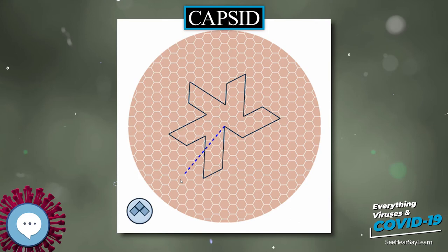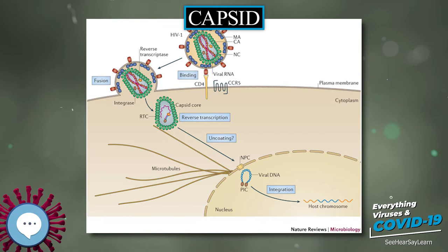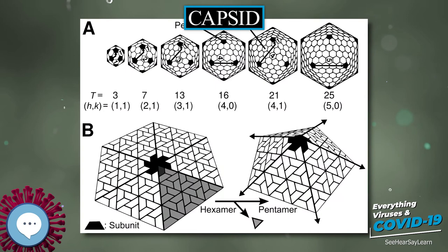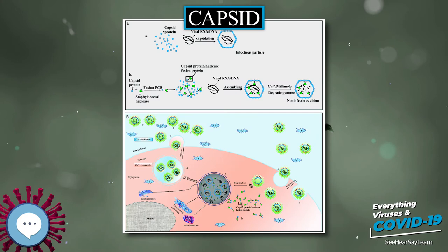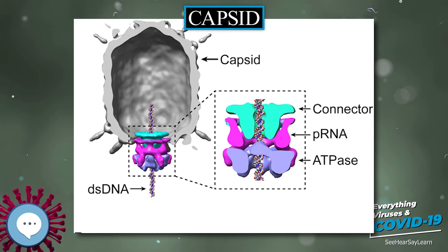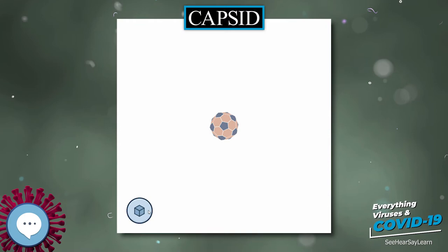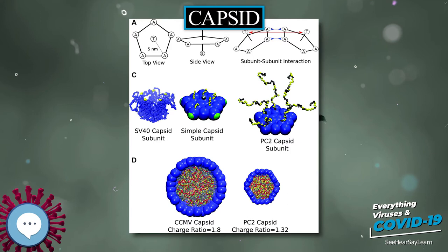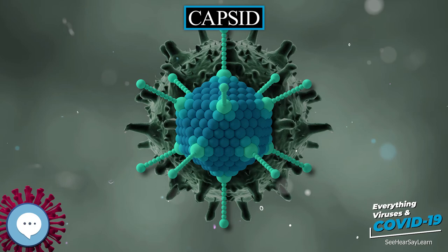Like the Goldberg polyhedra, an icosahedral structure can be regarded as being constructed from pentamers and hexamers. The structures can be indexed by two integers H and K, with H ≥ 1 and K ≥ 0. The structure can be thought of as taking H steps from the edge of the pentamer, turning 60 degrees counterclockwise, then taking K steps to get to the next pentamer. The triangulation number T for the capsid is defined accordingly. In this scheme, icosahedral capsids contain 12 pentamers plus 10(T−1) hexamers. The T number is representative of the size and complexity of the capsids.